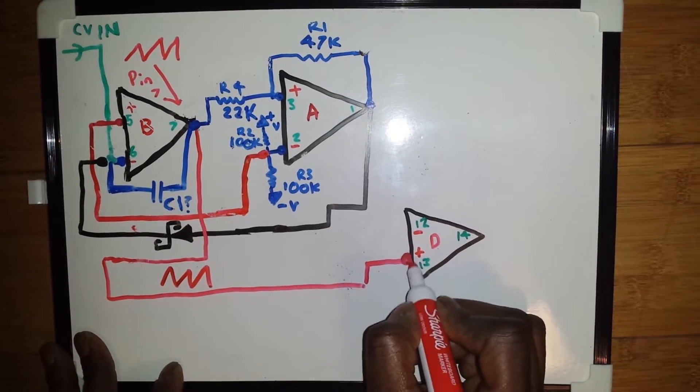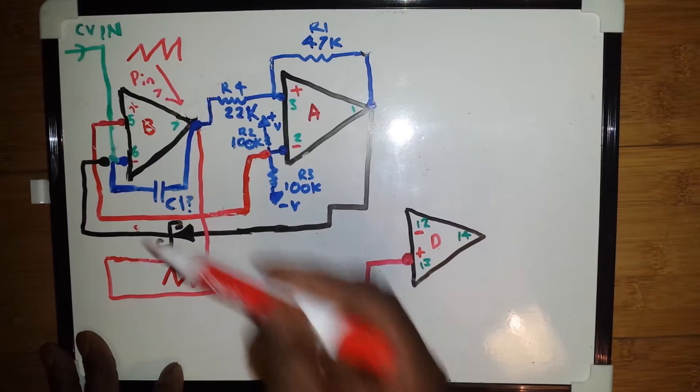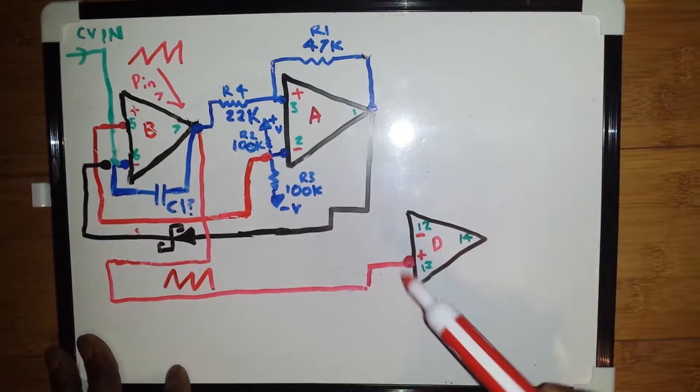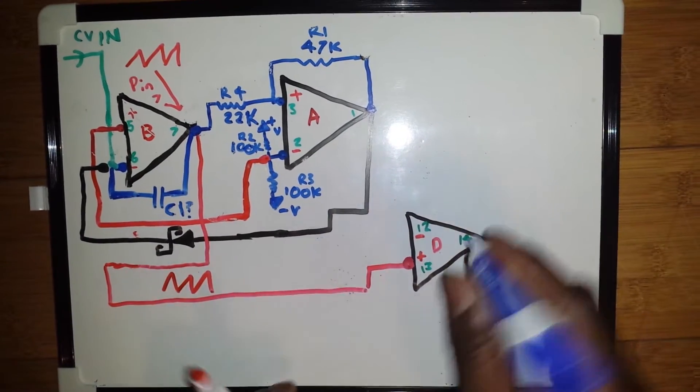And you can see the circle I've put there, that is a connection node. Any straight through line is not a connection as you can see here. We go straight through into pin 6. So we have a connection node there.